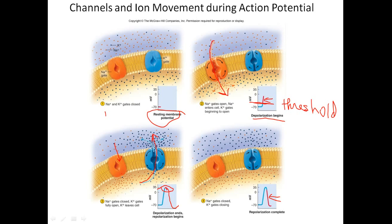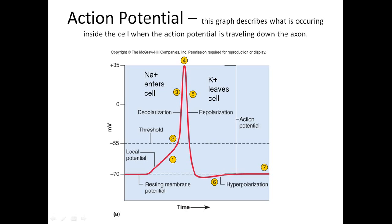To summarize: sodium enters the cell during depolarization, and potassium exits the cell during repolarization. Here's a graph of the action potential, showing the change in charge in millivolts during conduction of a neural impulse. Time is on the x-axis and millivolts on the y-axis. At negative 70, we're at resting membrane potential.